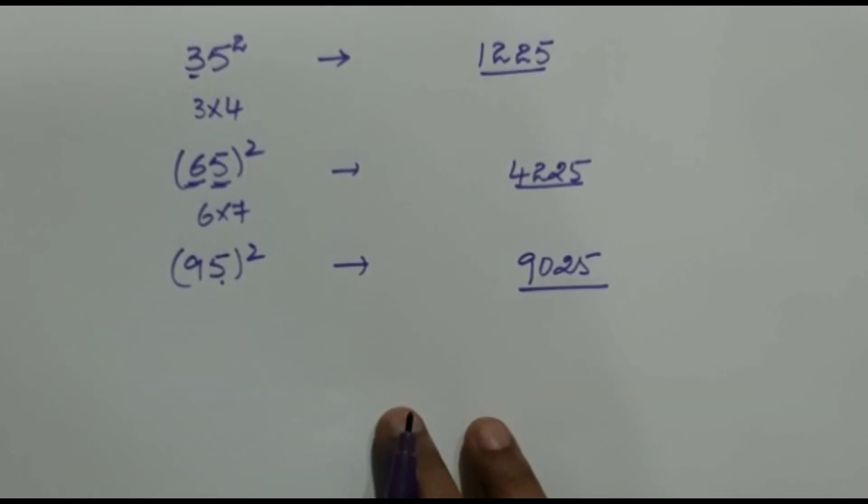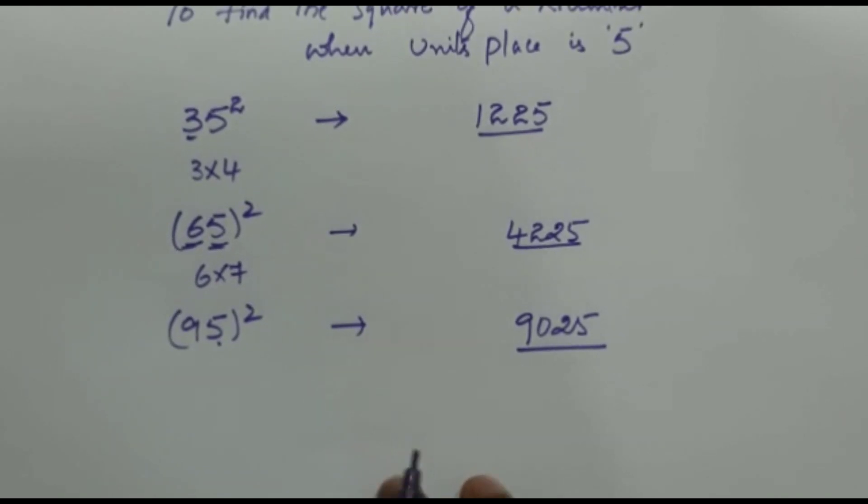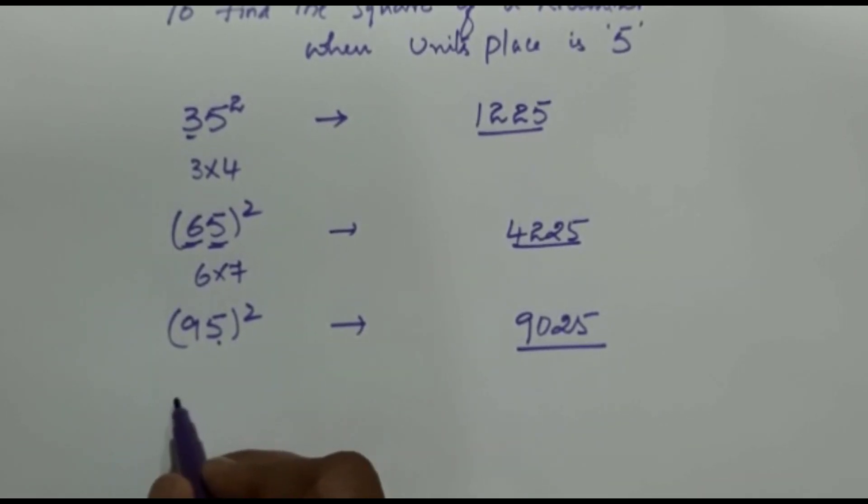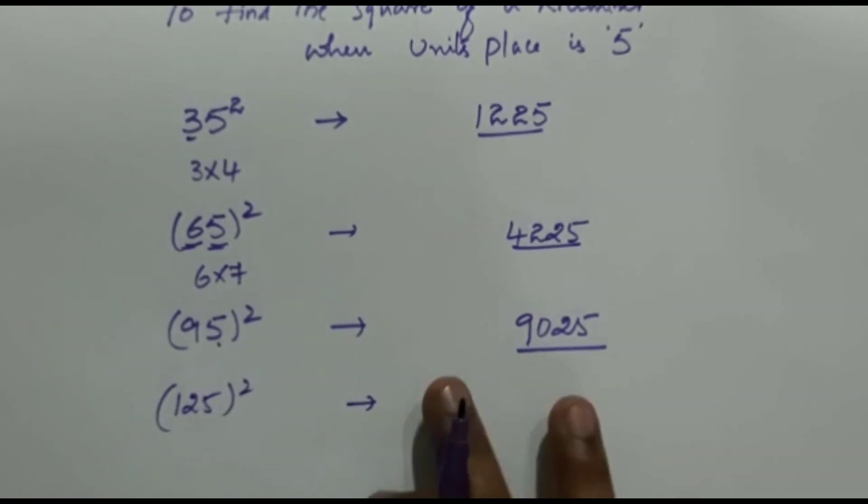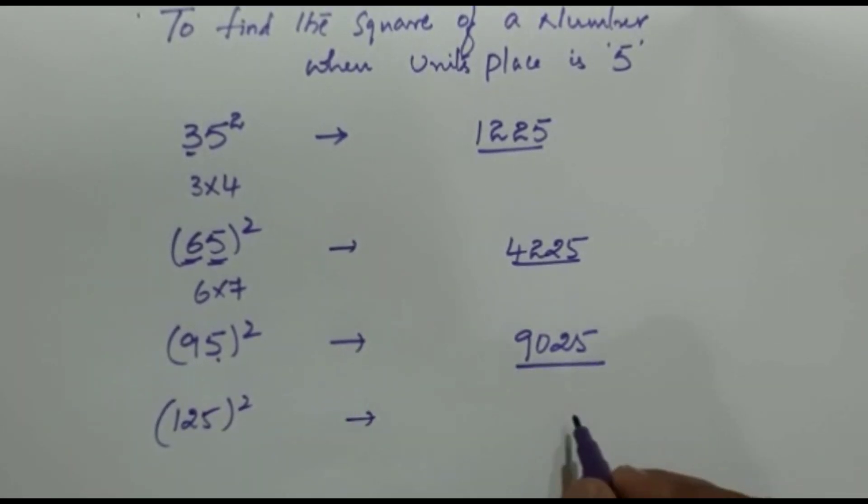This can be applicable to any 3-digit number also. Here see, for example, if the number is 125. So 125 squared is equal to... Here see, since 5 is there, therefore 5 squared is 25.